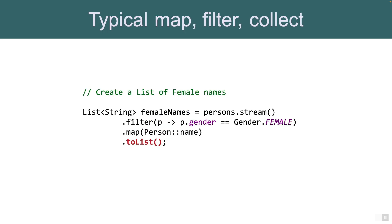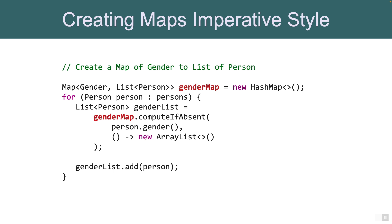Typically when we use streams, we think about filtering and then mapping and then converting to a list. Just like here, we do a filter based on gender, then extract the person's name, and that creates a completely different list of names. For example, the code here will be outputting all the female names.